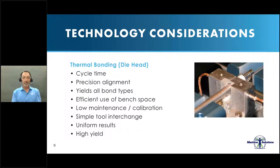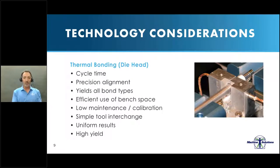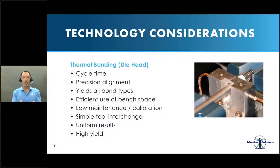Split dies can be machined to a very narrow length and deliver that temperature right where you need it. Split die bonders are typically compact, take up minimal space, and are very good for JIT situations where you're performing a bond within an assembly line. Split die bonding offers very simple, cost-effective tool interchange — die heads can be machined quickly and easily, and interchanged for multiple processes.